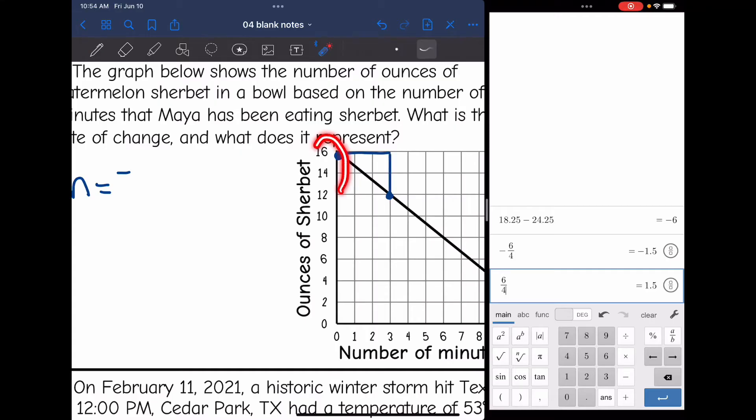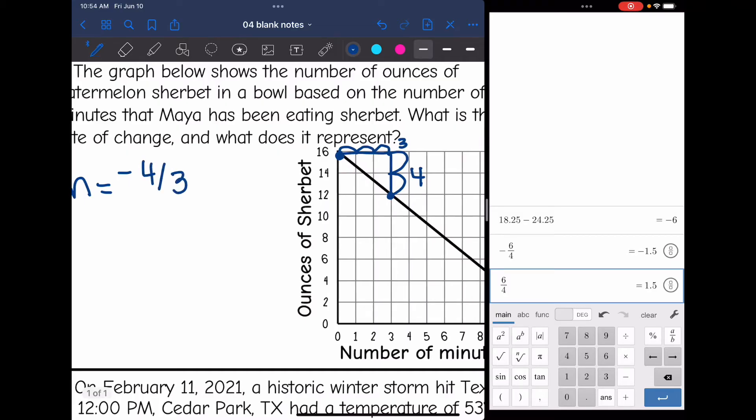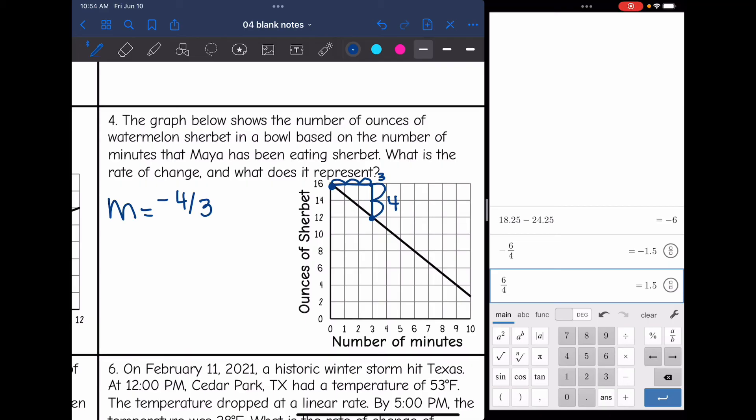Now let's find the rate of change by finding two perfect points and drawing a slope triangle. The y-axis is counting by twos. So when I count the rise, I'm going to count by twos. So two, four, the rise is four. And then the run is counting by ones. So the run is one, two, three. So the slope is negative four thirds. So what does that represent? That means that she is eating four ounces every three minutes.